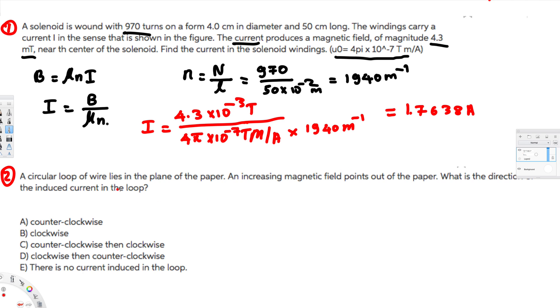Now let's look at this question. A circular loop of wire lies in the plane of the paper, and an increasing magnetic field points out of the paper. What is the direction of the induced current in the loop?